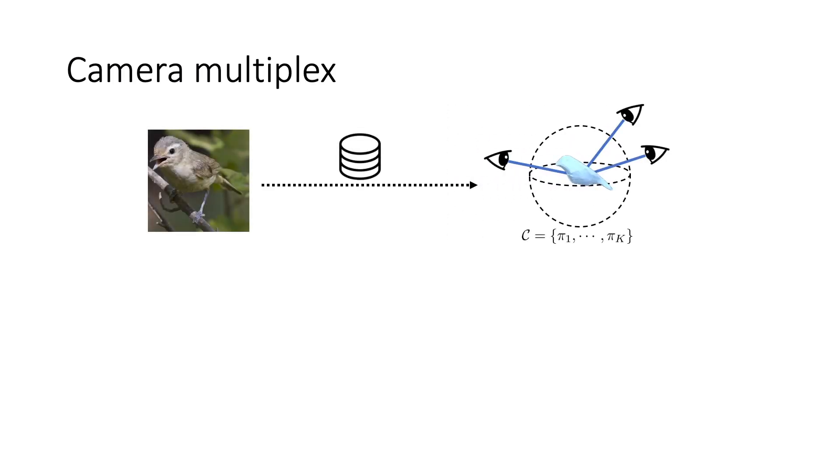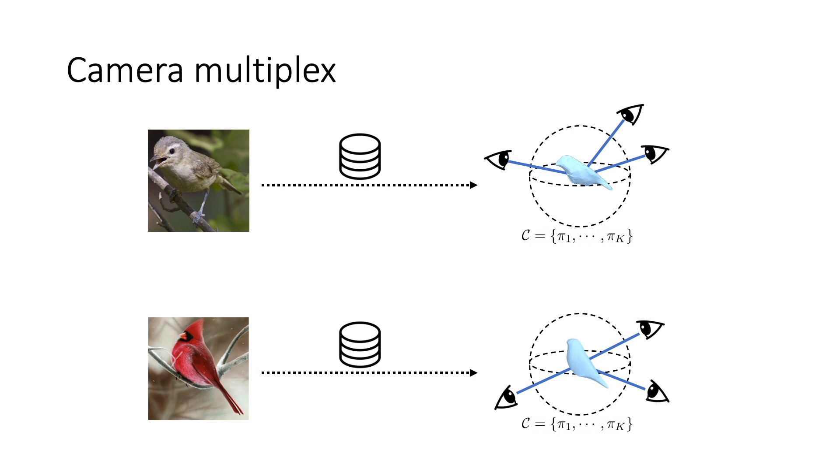Since the camera pose optimization landscape has a lot of local minima, we jointly optimize over a set of K camera hypotheses. We call this set of K cameras a camera multiplex. For each instance in the training set, we store a separate camera multiplex.